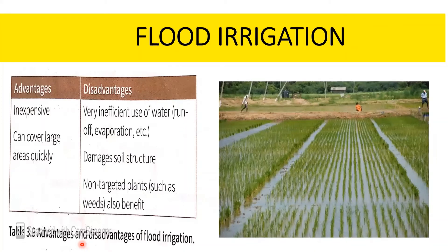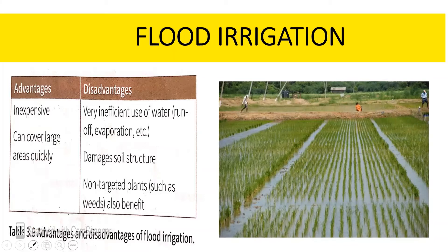The fourth type of irrigation is flood irrigation. Flood irrigation is an ancient method of irrigating crops. Water is delivered to the field by a ditch, pipe or some other means. The advantages are: it is inexpensive; it covers a large area quickly; and minimal labour supervision is required for application. The disadvantages are: uneven distribution of water to crops; little control over the water supplied to crops; a lot of water is lost through evaporation; and levelling of land is required, which can be very expensive.